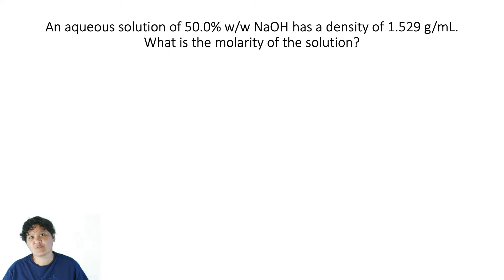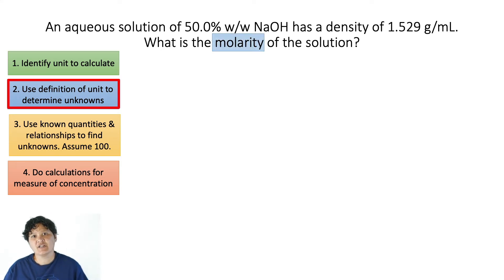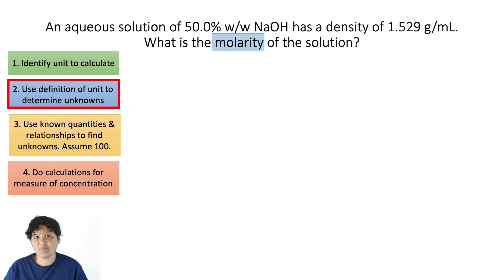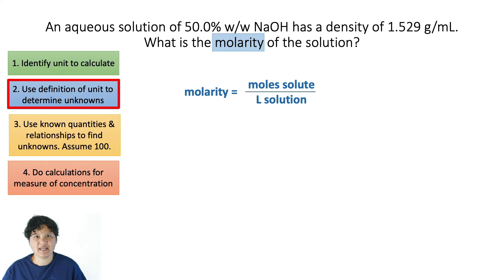In this problem, we're dealing with a 50% weight-per-weight solution of sodium hydroxide. Step one: identify the concentration unit you want to solve for — here, that's molarity. In step two, use the definition of molarity to figure out what quantities you need. Students often say moles per liter, but it's important to think about moles of what and liters of what. A more specific definition is moles of solute — in this case sodium hydroxide — per liter of solution. Now you're at step three, where you create a plan using what you know: mass percent and density.